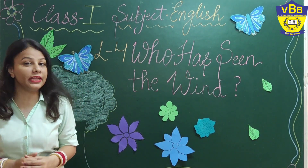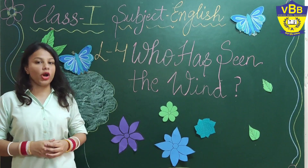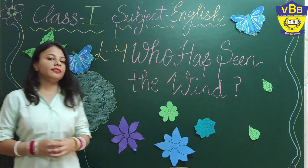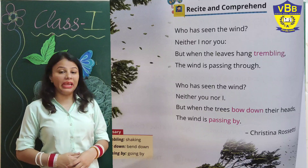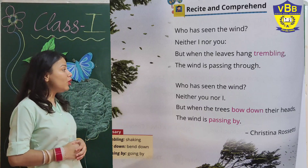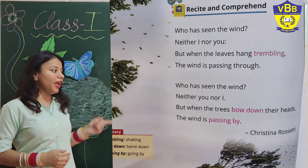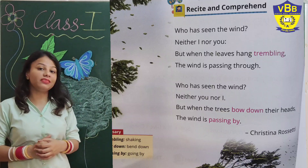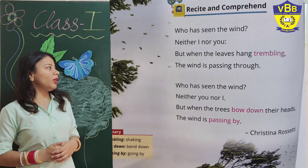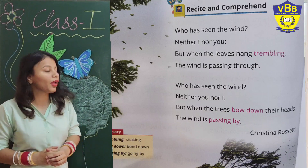Now everyone be ready. Take out your English book and open page number 46. Can you see page number 46? Now we are going to read the poem one by one. I will read each and every line of this poem and explain the meaning also. First of all, write down the date on page number 46.